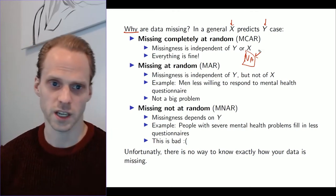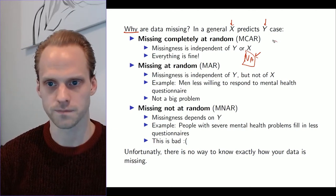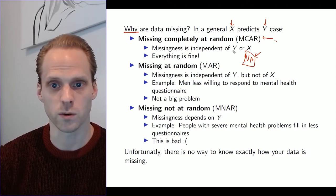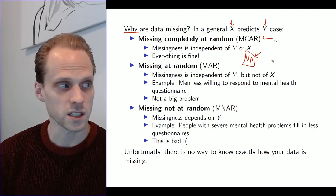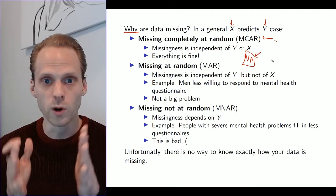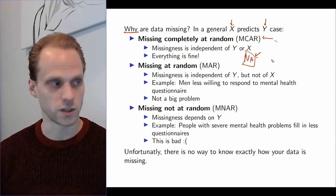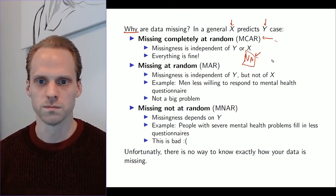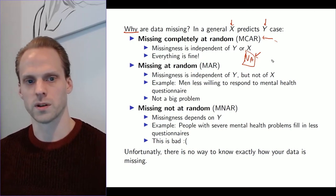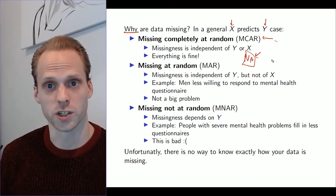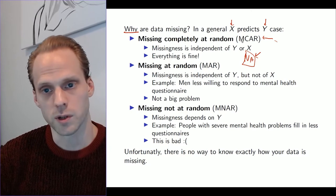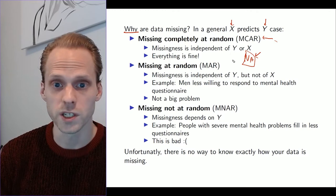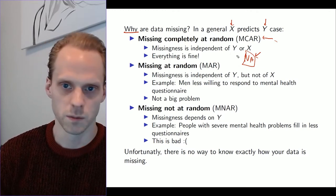In the first case, missing completely at random (MCAR), we're going to assume that the missingness of Y is independent of Y or X. That actually means it's missing fully at random. There was no mechanism whatsoever. It's just that the person at random missed that response, for example. That can happen, but there is no structure whatsoever in it. It's not very likely, but this can happen.